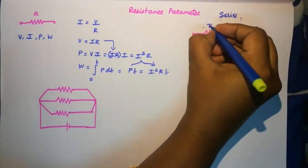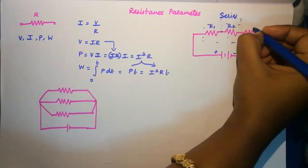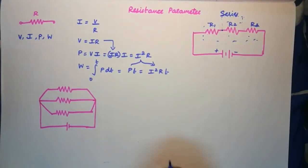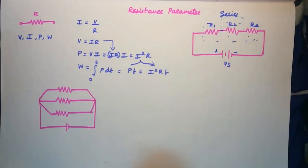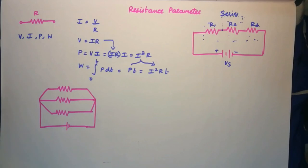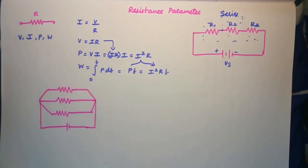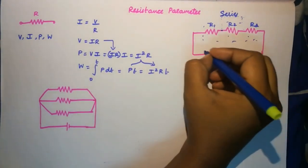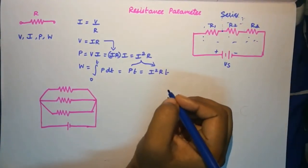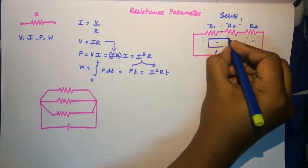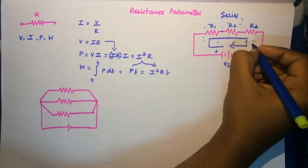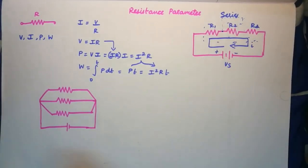Let's name these resistors R1, R2, and R3, and take the source voltage as Vs. Now let's try to find the relationship between these resistors and the total voltage that flows through this entire closed path.